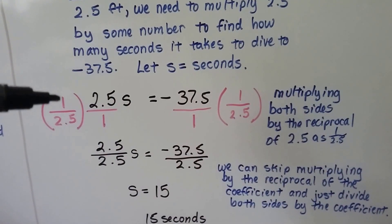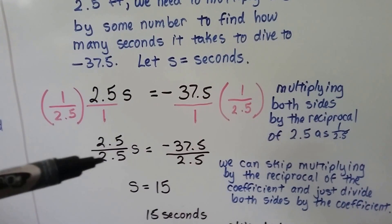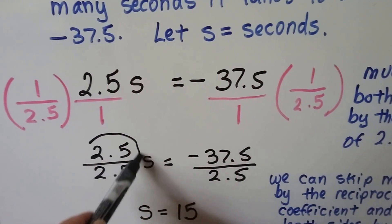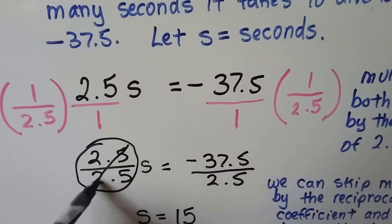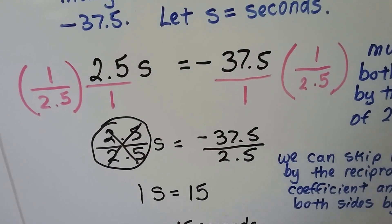So, we multiply both sides, and 1 times 2.5 is 2.5, and 2.5 times 1 is 2.5. So, here's our buddy, the invisible 1. When we have the same numerator and denominator, it makes a 1, doesn't it? So, we've got a 1 here. We've got 1s.